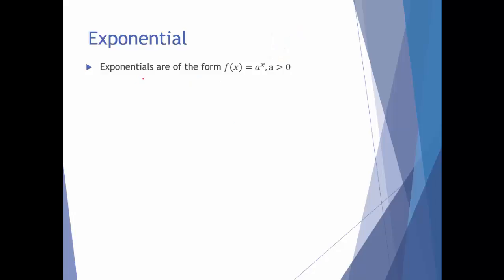For example, f of x equals one-fifth to the x — that's an exponential function. f of x equals 10 to the x — that's also an exponential function. The base can't be 0 and it can't be negative. These are two examples of exponential form, but certainly not the only examples.